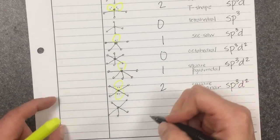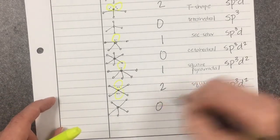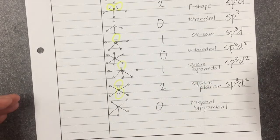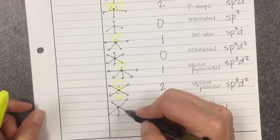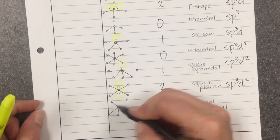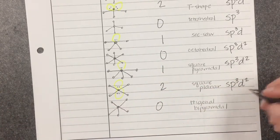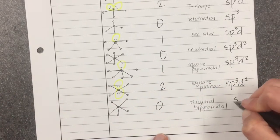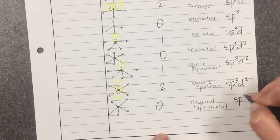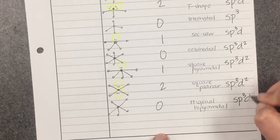And for the last one, there are no lone pairs — just five terminal atoms. I need five orbitals to do this, so the hybridization is SP3D.